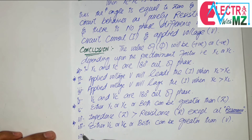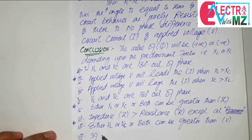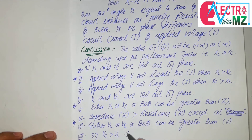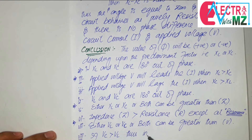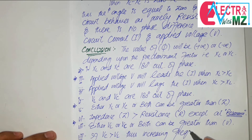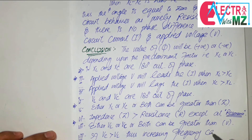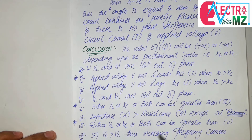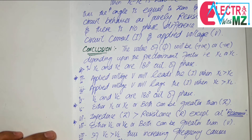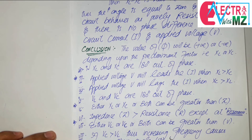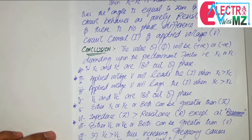Point number 8: if VC is greater than VL, then increasing frequency causes the phase angle phi to decrease.